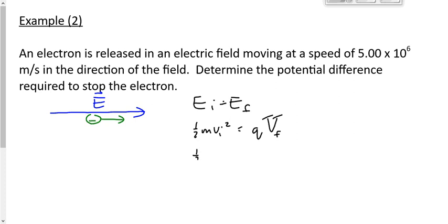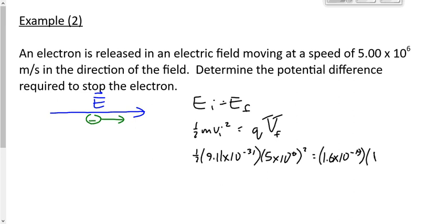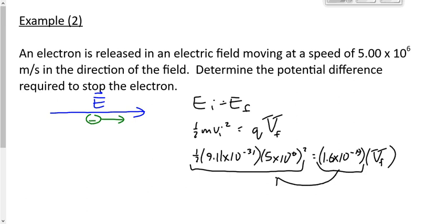So we're going to say: one-half times the mass of the electron, which is 9.11 times 10⁻³¹, times vi² where vi is 5 times 10⁶, equals the charge of the electron — we drop the sign — times Vf. Multiply the numbers on the left side and divide by 1.6, and we get a final potential of 71.2 volts.